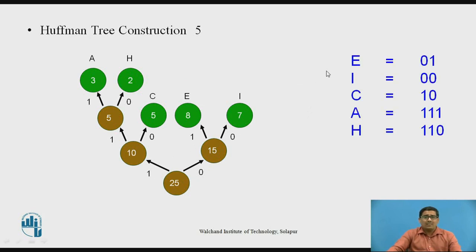Now, to find the codeword for each symbol, we go from bottom to top. For E: E is on the right side, so first comes 0, then 1 — so E is 01. For I: going bottom to top gives 0, 0 — so I is 00. For C: it gives 1, 0 — so C is 10. For A: it gives 1, 1, 1 — so A is 111. For H: it gives 1, 1, 0 — so H is 110. In this way, the Huffman tree is constructed.